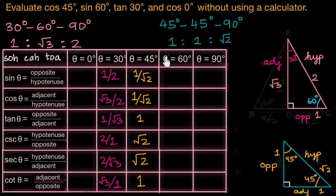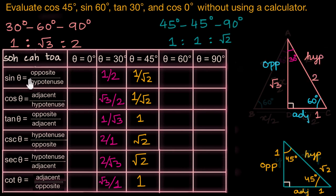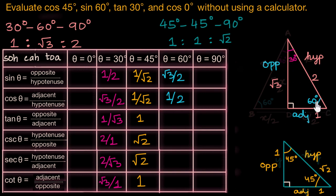Moving on to theta equals 60 degrees. We have 60 degrees in our 30-60-90 triangle. With respect to the 60 degree angle, the adjacent side is the short leg, the opposite side is the longer leg, and this is the hypotenuse. Sine theta is opposite over hypotenuse, which is √3/2 — so sine 60 degrees is √3/2. Cos theta is adjacent over hypotenuse, which is 1/2. Tan theta is opposite over adjacent, which is √3/1 = √3.